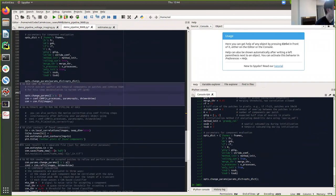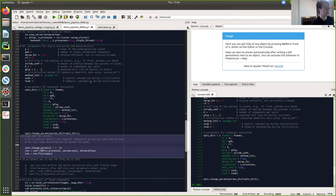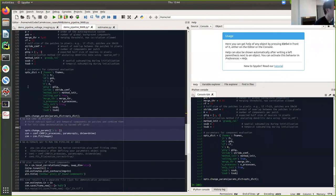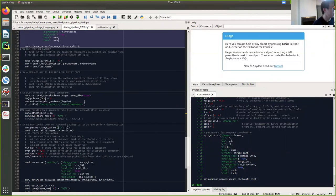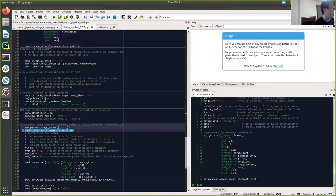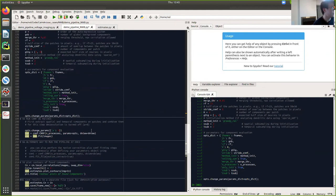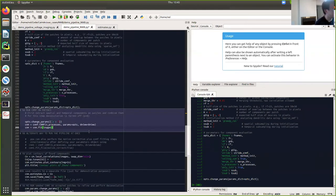So after that, what we want is using CaImAn to do the source extraction and deconvolution. So for source extraction, our goal is to find the spatial footprint of neurons and also the signal of neurons. And in the deconvolution step, our goal is to find the denoised version of the signal using the autoregressive model. And these parameters, Andrea has already talked about it. So we'll just go.